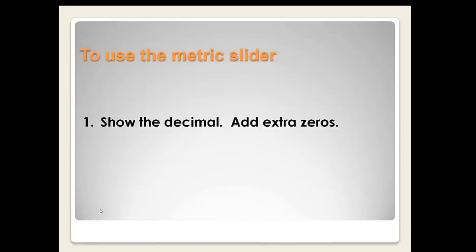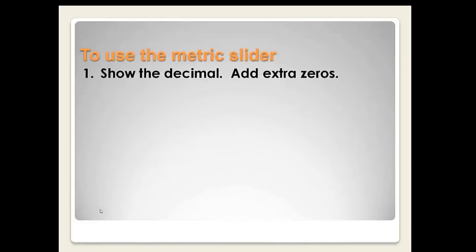How do you use the metric slider? First of all, you're going to start with a number. You're always going to be given a number, like how many centimeters are in 127 millimeters. Sometimes the decimal is showing when you're given that information, and sometimes it's not. If it's not showing, you can go ahead and put a decimal to the right of the last number. It's there, it's invisible. But when you're using the metric slider, you need to make it visible. Then you're going to add some extra zeros before the number and after the number, so that when you're using your metric slider, you have some room to work.